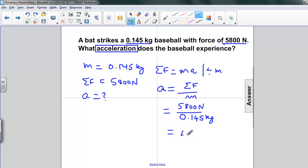And if you put this in your calculator, the answer you will get is 40,000. And remember, newtons divided by kilograms is meters per second squared. So our answer is the acceleration is 40,000 meters per second squared.